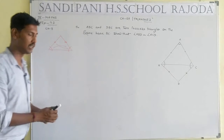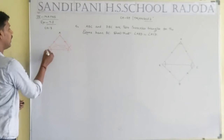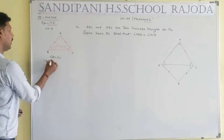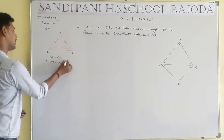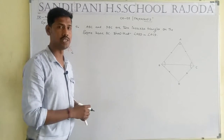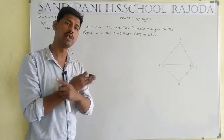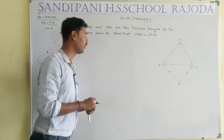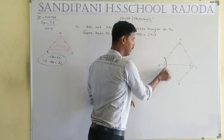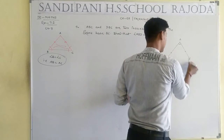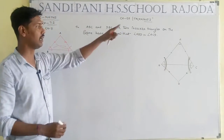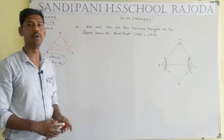For example, consider triangle ABC in which angle B equals angle C, such that AB equals AC. If AB equals AC, then angle B equals angle C — sides are equal means angles are equal, and angles are equal means sides are equal. We have to prove that angle ABD will be equal to angle ACD.